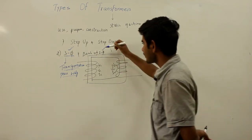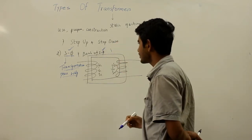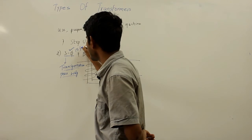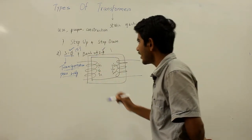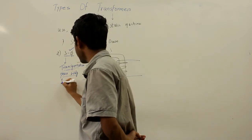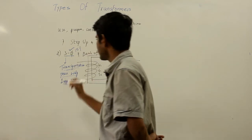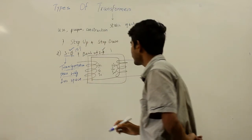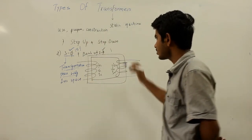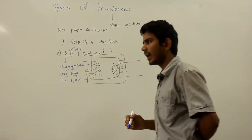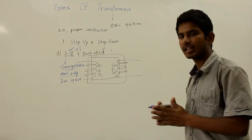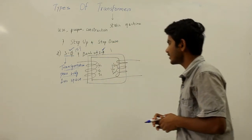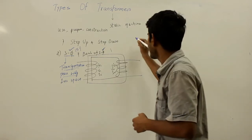A single three-phase transformer unit costs around 15 percent less than a bank of three single-phase transformers and also occupies less space. However, when size matters, you can go for a bank of three single-phase transformers, which can be erected separately and are easier to transport.